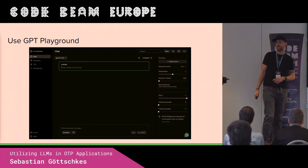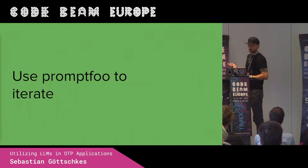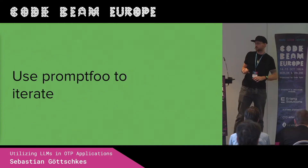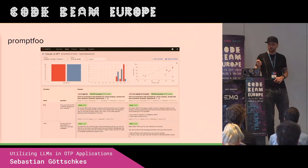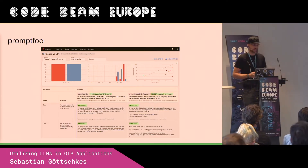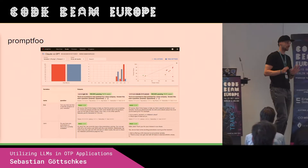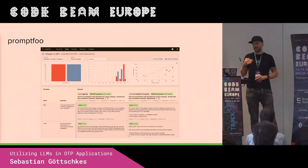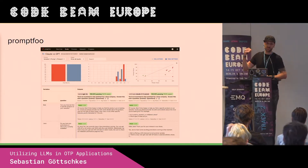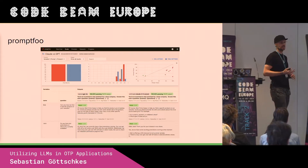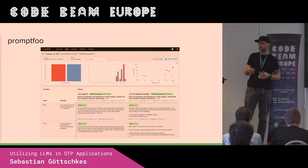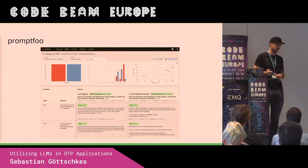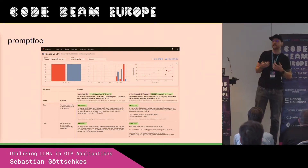When you have a great prompt and everything is working, you can use a tool like PromptFoo to iterate on the prompt and run some tests. PromptFoo is a tool written in JavaScript — not Elixir sadly — but you don't need a lot of JavaScript to use it. In PromptFoo you can define your prompts and inputs, then run tests like unit tests. You can also do more advanced things like red teaming where you try to break it.